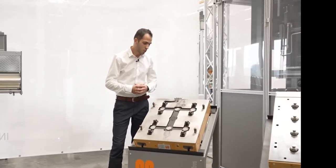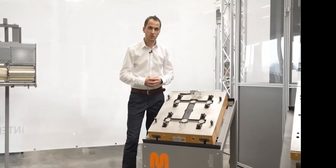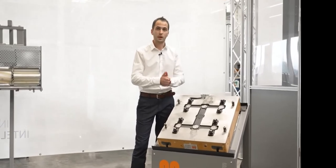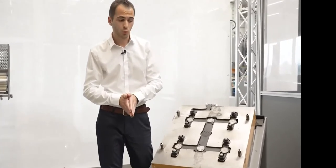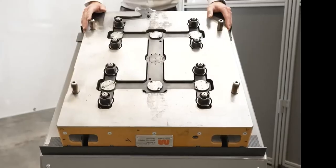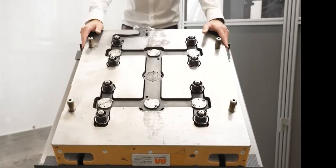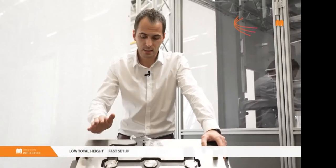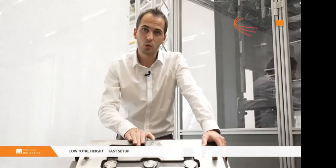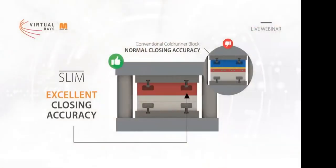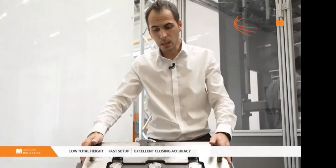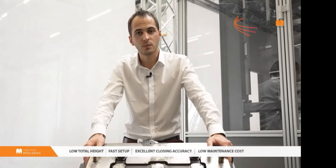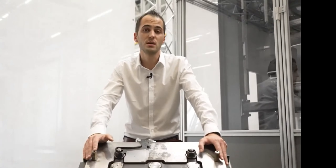This is also a great advantage for existing machines because you need no special heating zones, you are independent from local country voltage, and in many cases no tie bar extension is needed. To summarize the MAP-CAB Slim: very low total height, very fast setup, only one heating cooling unit connection, excellent closing accuracy due to steel-by-steel transmitted clamping force, and very low maintenance costs because there are no electric connectors and no heating cartridges inside.